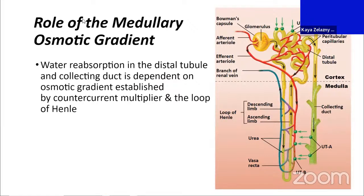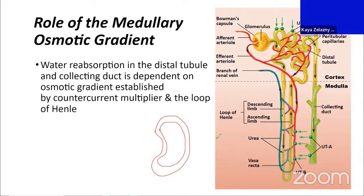This brings us to the medulla. When we have a kidney—kidney bean shape, which is why it's called that—we have an outer cortex and the inner medulla. We have different properties in these different regions, particularly different osmotic gradients. We have different amounts of solutes pulling on water as we get deeper into the kidney. The loop of Henle makes the properties of the medulla different from the properties of the cortex.